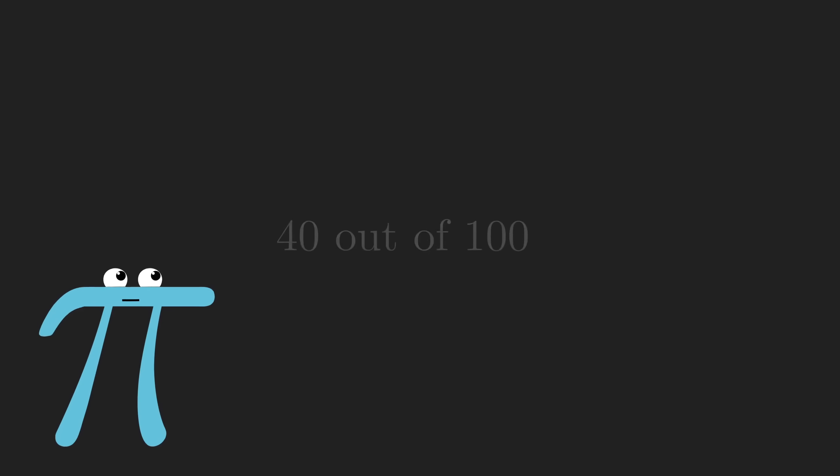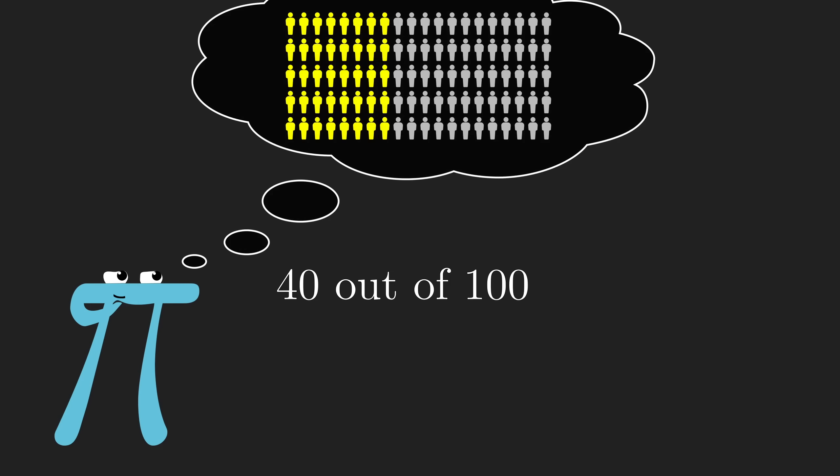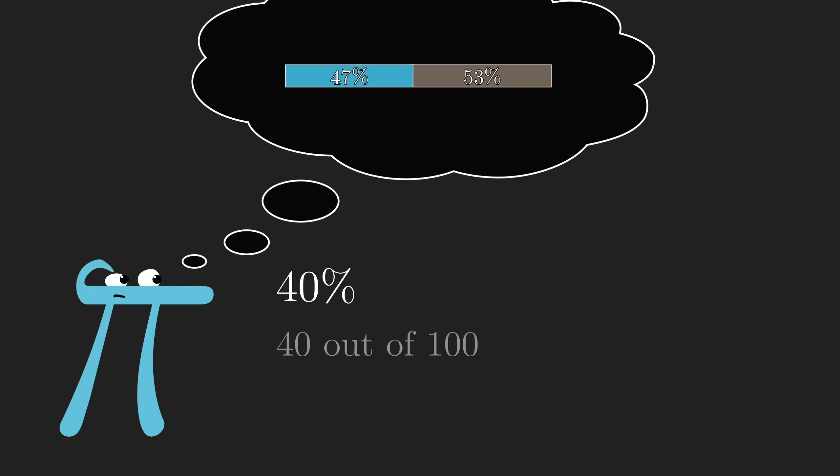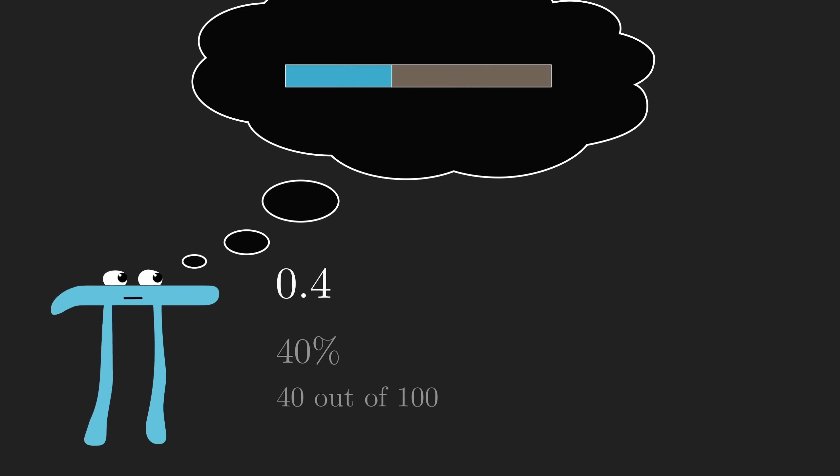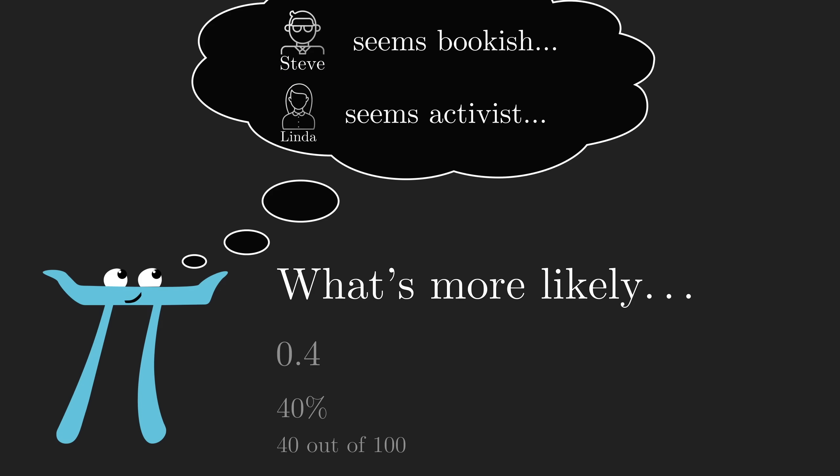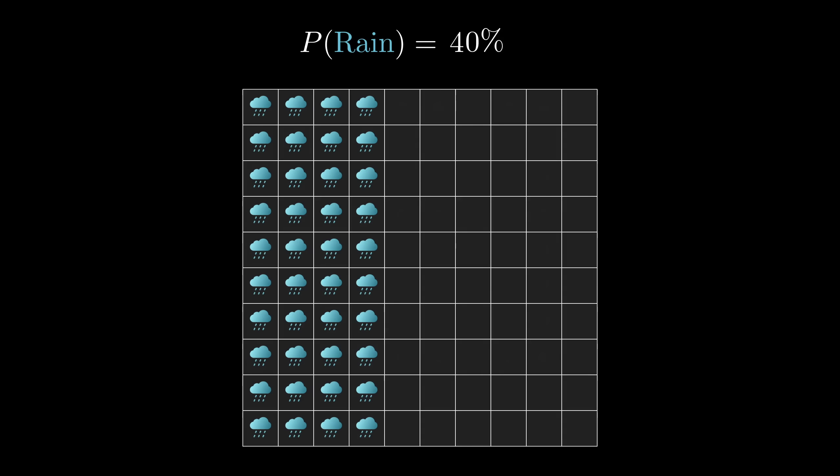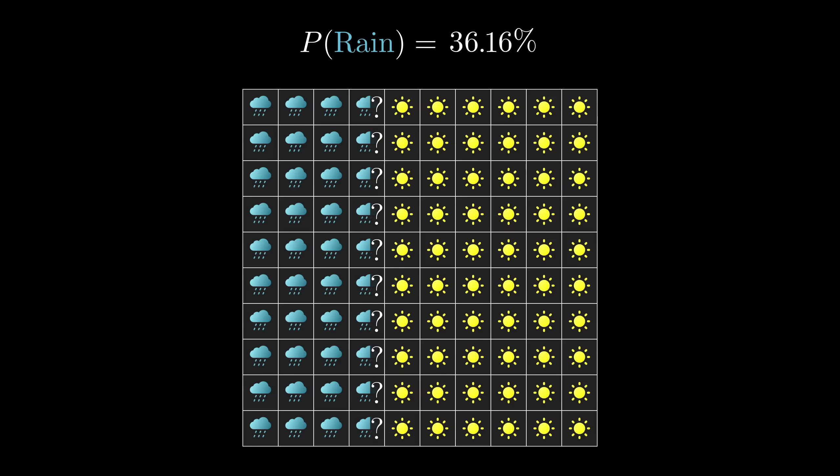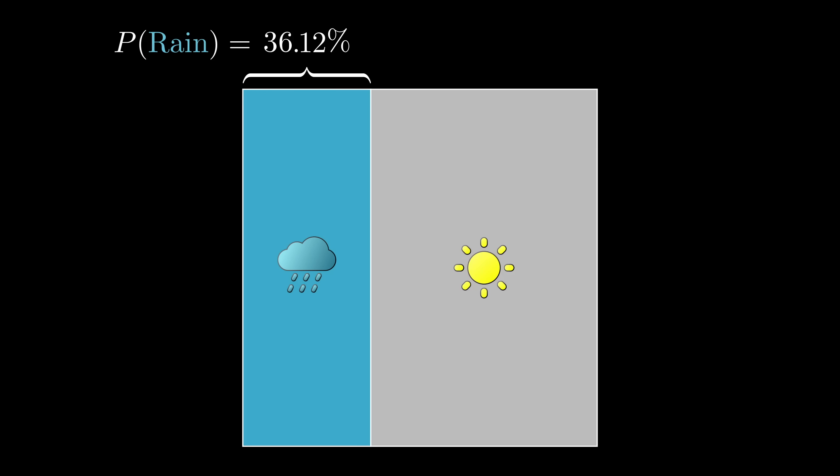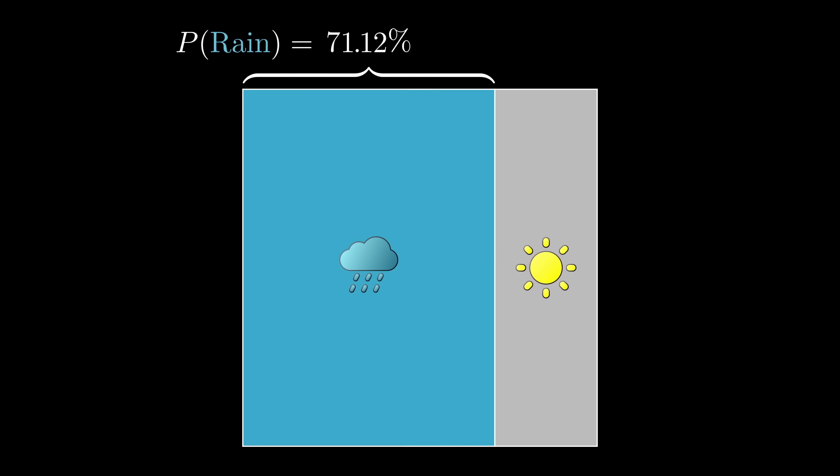It's weird. Somehow phrases like 40 out of 100 kick our intuitions into gear much more effectively than 40%, much less 0.4, and much less abstractly referencing the idea of something being more or less likely. That said, representative samples don't easily capture the continuous nature of probability. So turning to area is a nice alternative, not just because of the continuity but also because it's way easier to sketch out when you're sitting there pencil and paper puzzling over some problem.